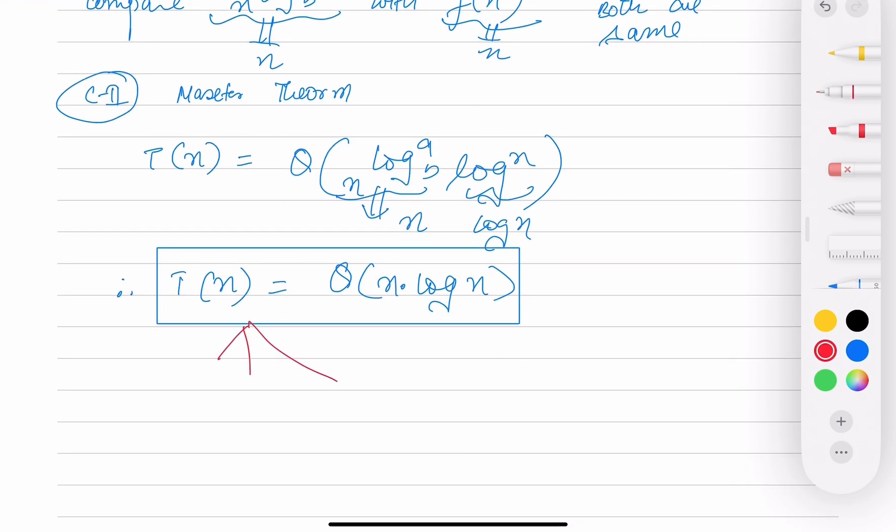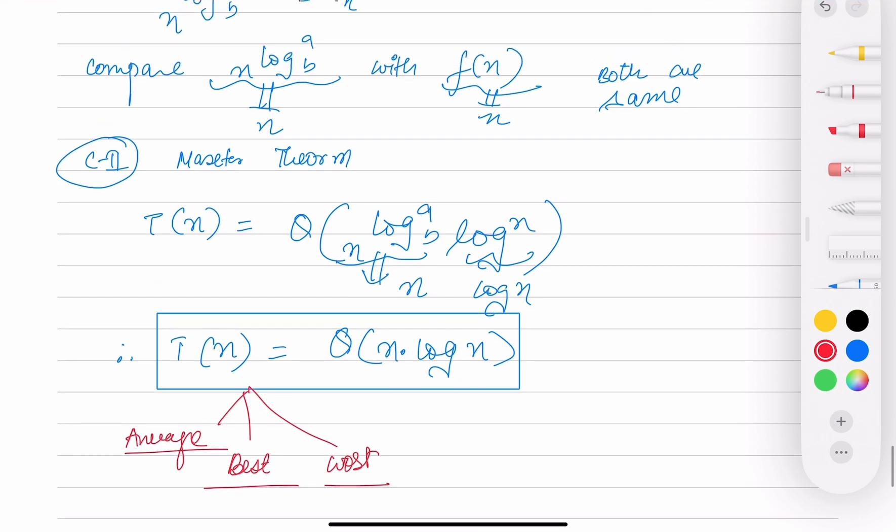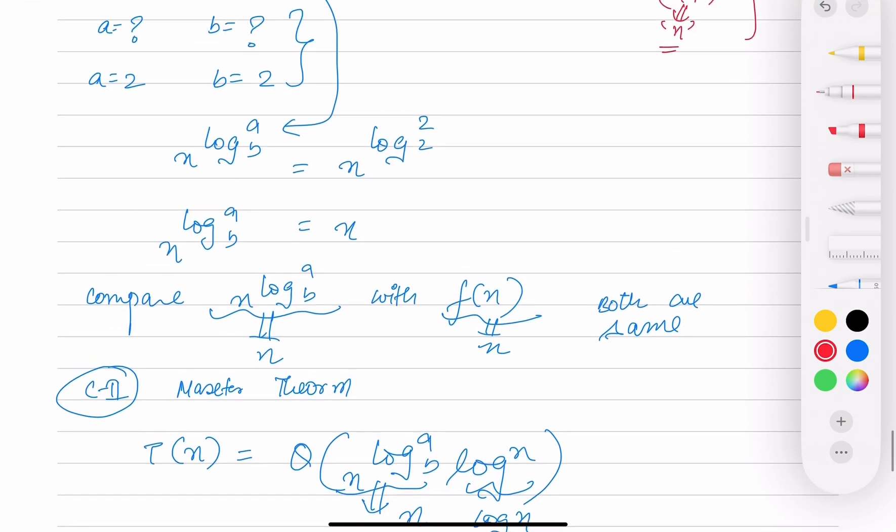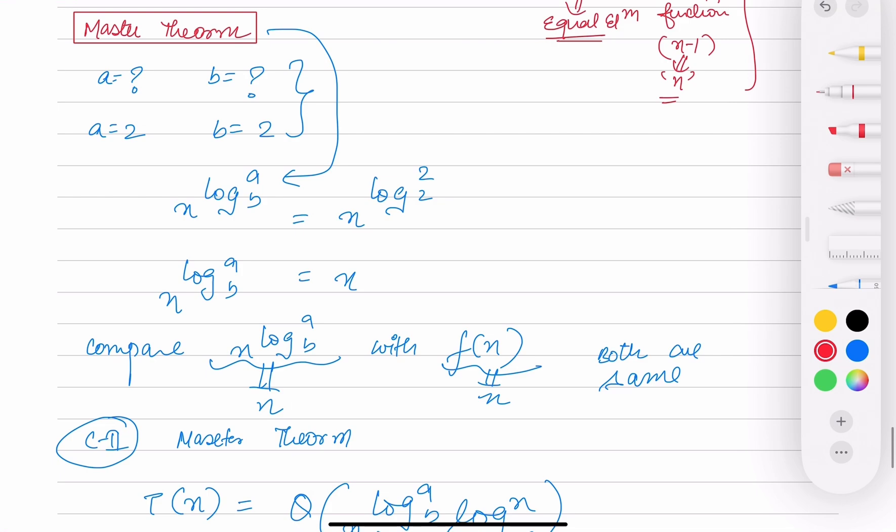This is the time complexity of merge sort. Now this remains same for all cases - average, best, and worst. Why? Because there is no condition where we have to stop. You need to perform divide until you get sub-array of element 1 and you're going to merge it.